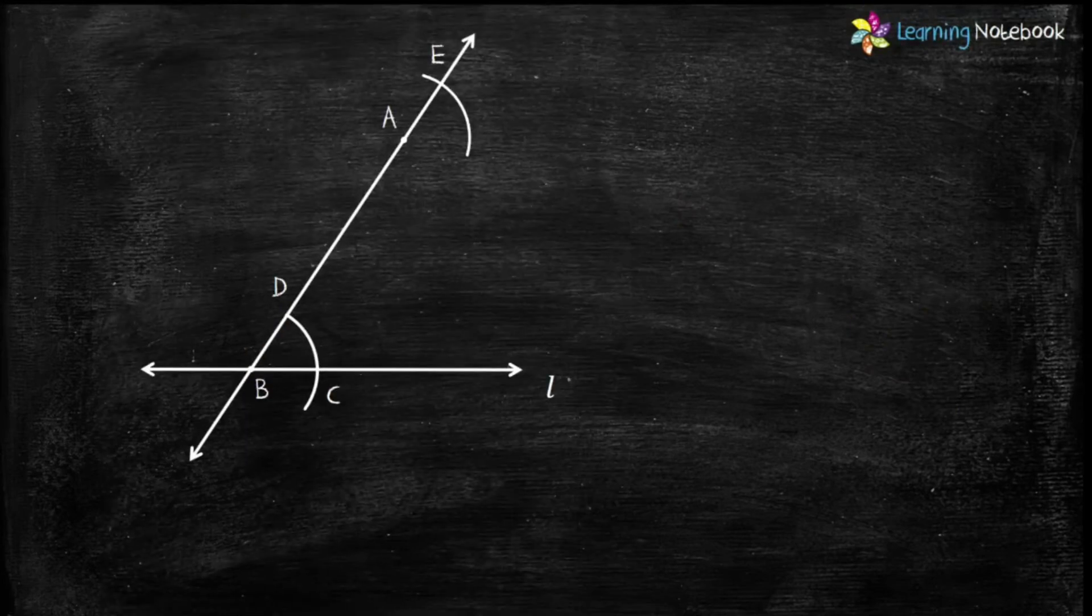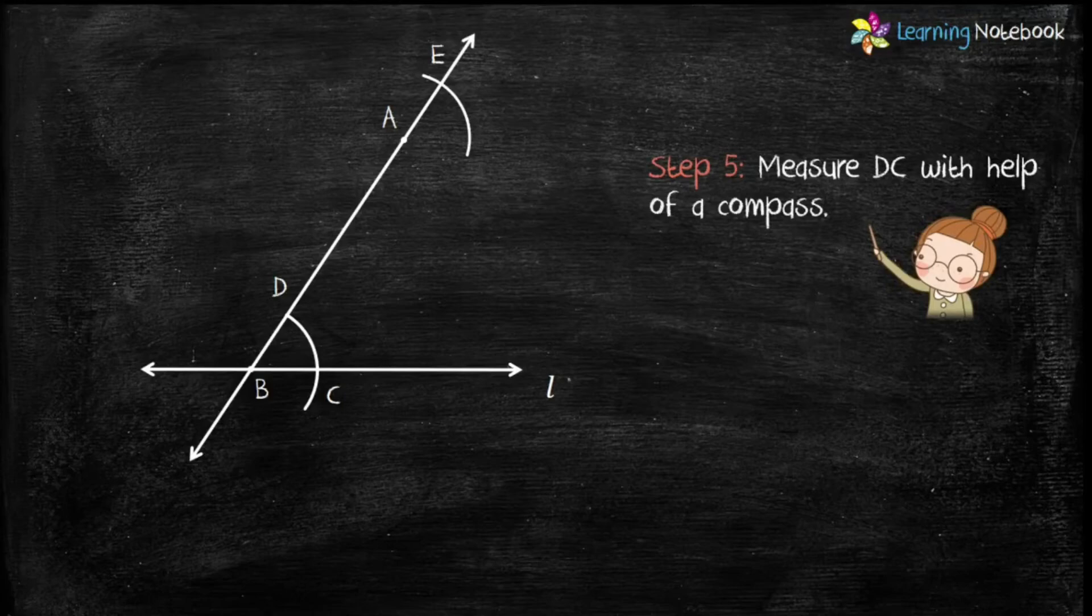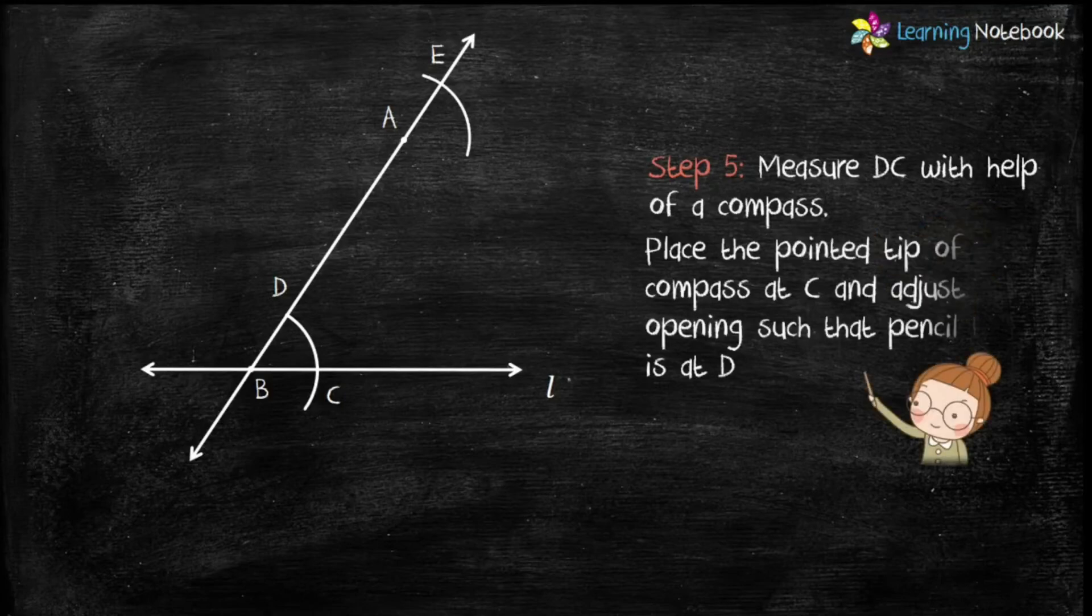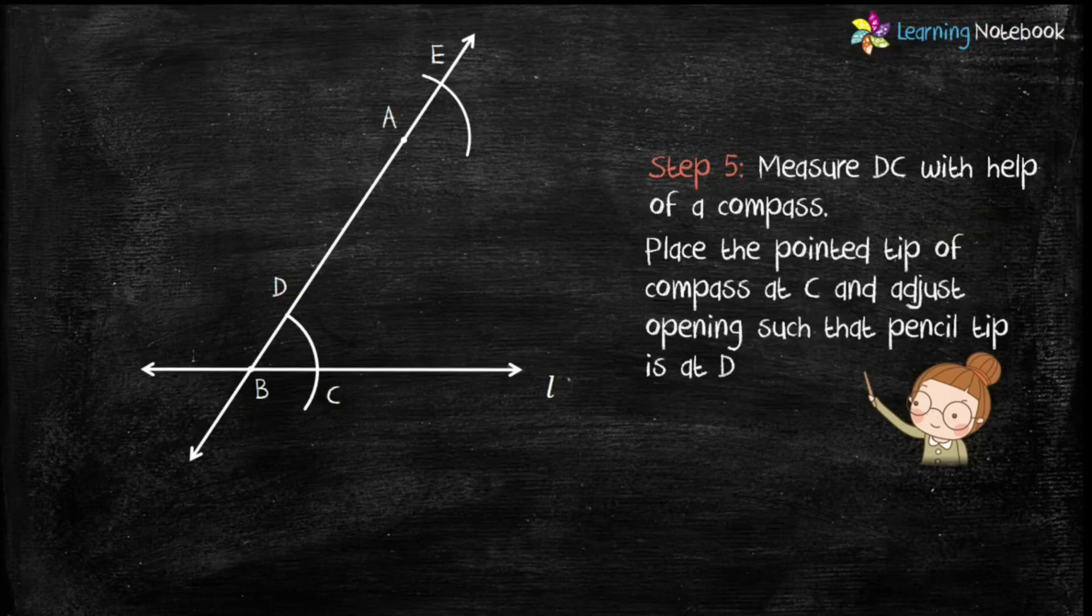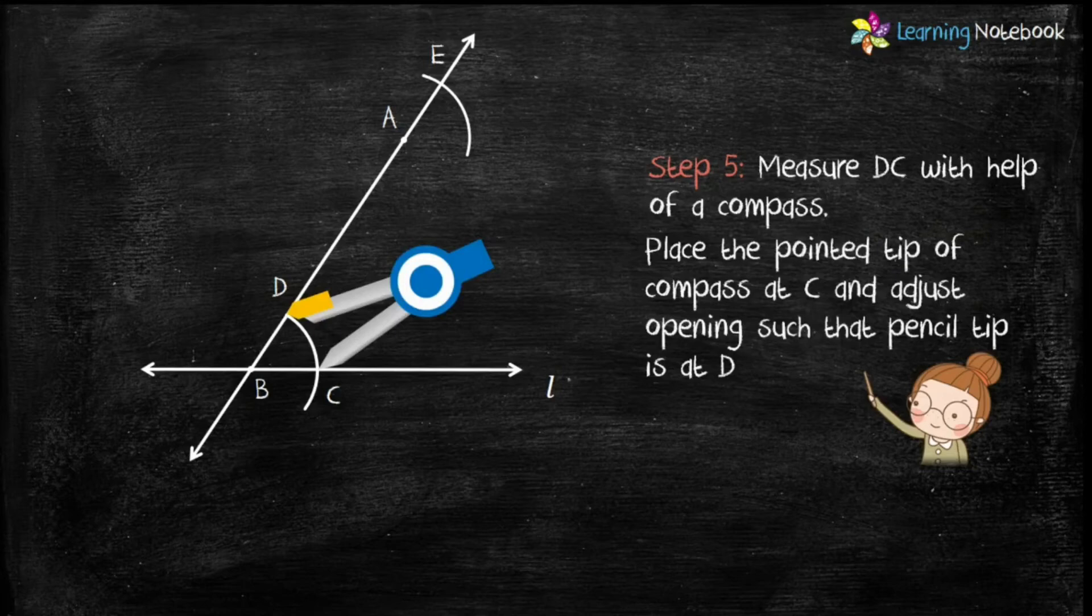Now, in the next step, measure DC with the help of a compass. To measure DC, place the pointed tip of the compass at point C and adjust the opening such that the pencil tip is at point D.